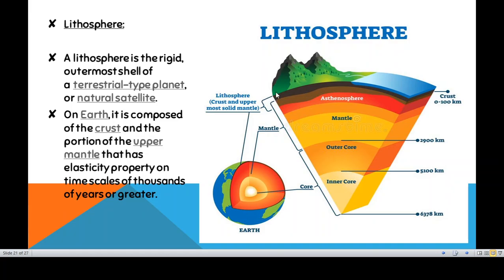You can find this crust layer in almost every terrestrial planet — for example Earth, Mercury, Venus, Mars, and the Moon. These terrestrial planets all have a similar kind of crust condition, meaning a hard rock layer at the upper surface. This hard rock layer works for the protection of the surface and the protection of the inner cores of the earth.